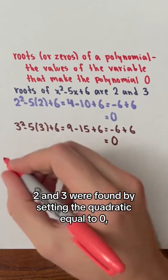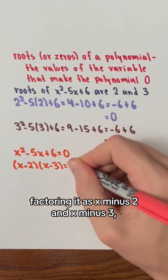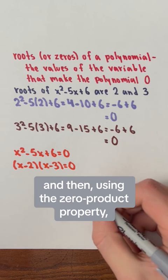In this example, 2 and 3 were found by setting the quadratic equal to 0, factoring it as x-2 and x-3, and then using the zero product property, setting the factors equal to 0 to find the values of x.